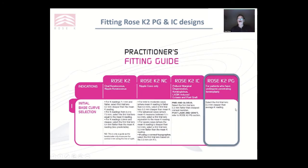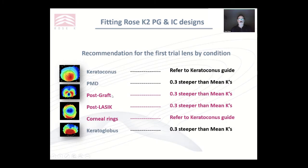There is a practitioner's fitting guide which will give you a hint for the first lens you should try. For the post-graft lens, it's 0.3 steeper than the average K readings. That applies for post-graft and for post-LASIK. For post-corneal rings, we ask you to refer to the keratoconus guide, because putting a corneal ring in only flattens the cornea about 0.1 to 0.2 — you don't get a large flattening, just a more regular shape over that area.